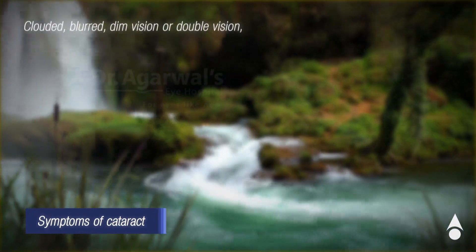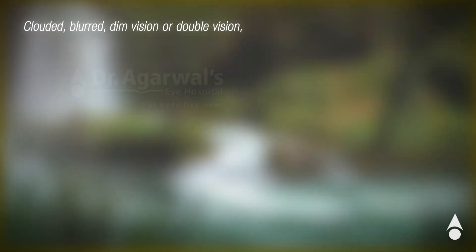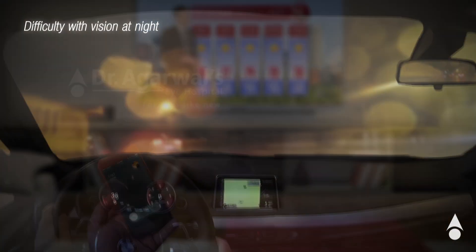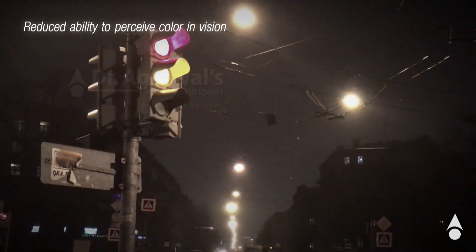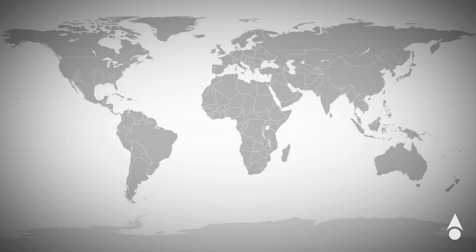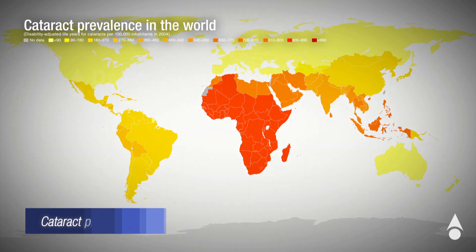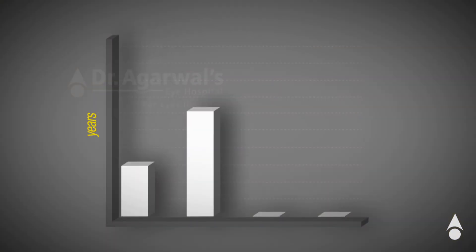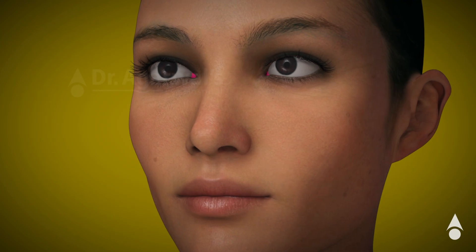The symptoms of cataract include clouded, blurred, or dim vision, double vision, difficulty with vision at night, and reduced ability to perceive color. The prevalence of cataract in the world varies across different regions and among different age groups, peaking beyond 40 years of age.